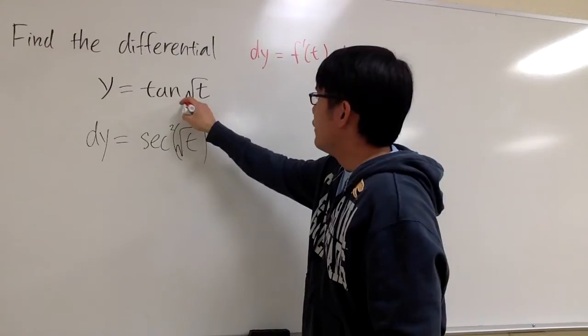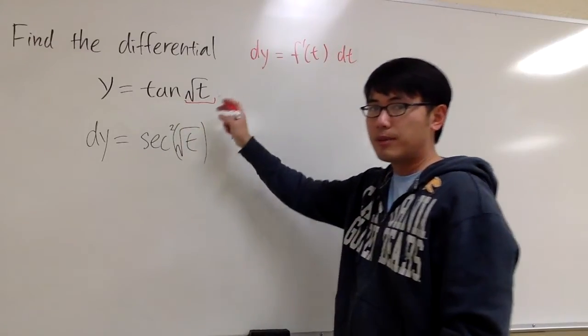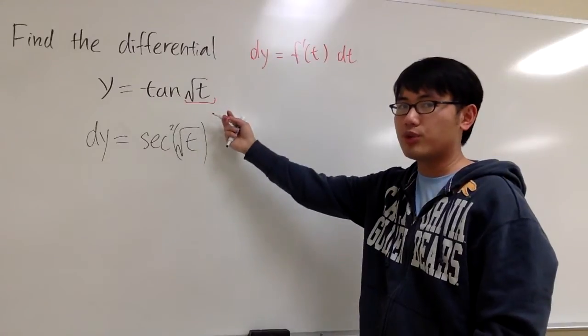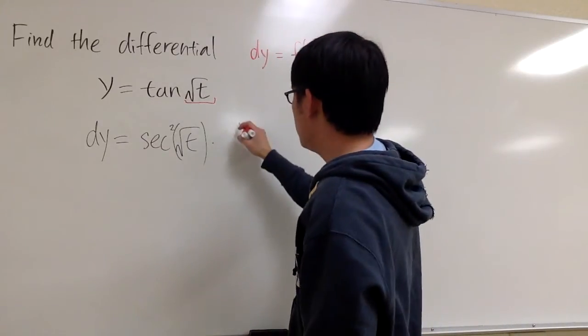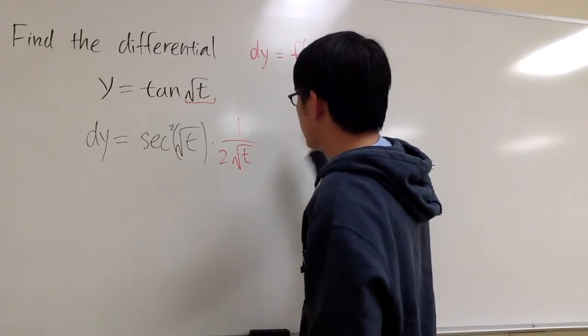And then I focus on what's inside, which is square root of t. I have to multiply by the derivative of square root of t because of the chain rule. And the derivative of square root of t is 1 over 2 square root of the inside, t like that.